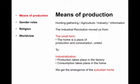The Industrial Revolution moved us from the small farm to the suburbs. On a small farm, the home is a place of both production and consumption: you grow food, prepare food, eat the food. You go out to the workshop, make a chair, and then sit on the chair. With industrialization, this is split. You make the chair in a factory, you sit on it in the home. The house now becomes purely a place of consumption — no production.